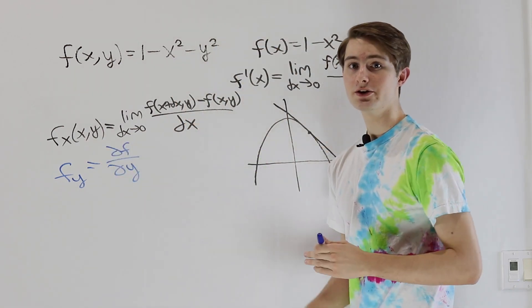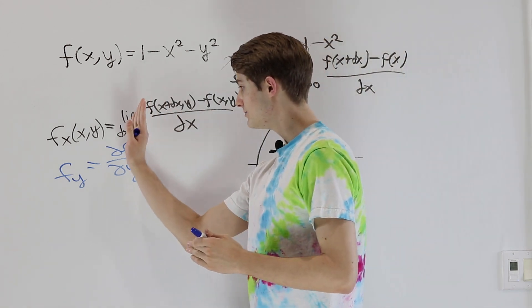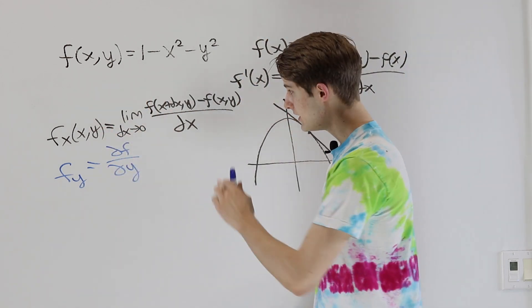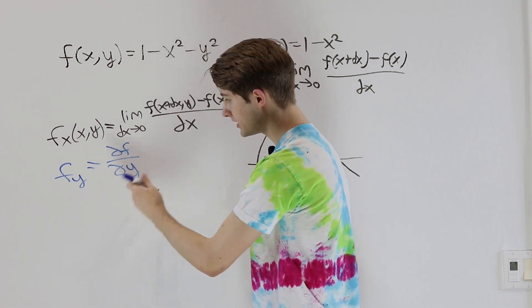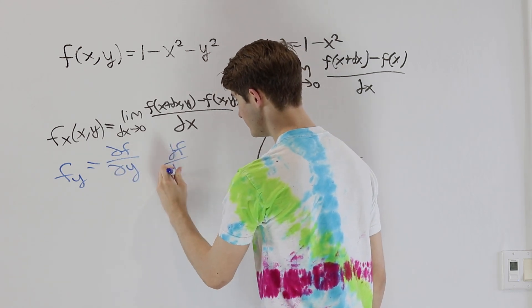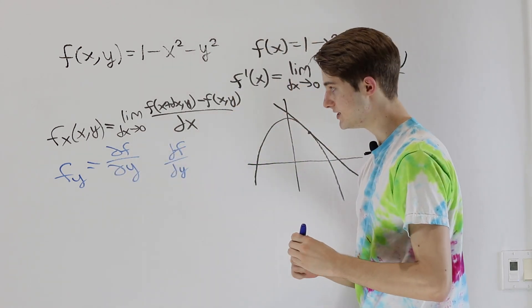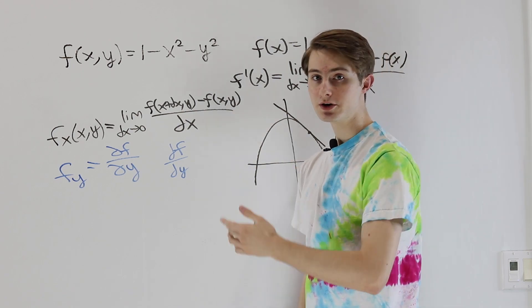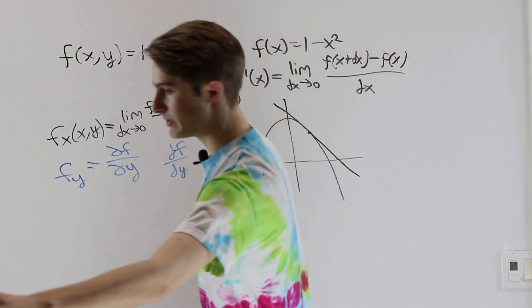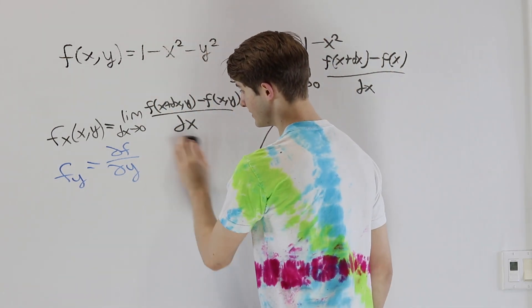These tilted d's right here are called del. It's just a d, but we tilt the stem a little bit. And this is saying, just like we would normally say df dy with the normal letter d, in this case we're taking the partial derivative of f with respect to y, and that's what those tilted d's represent.